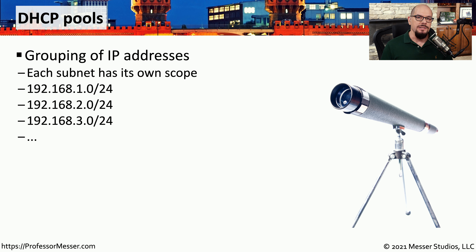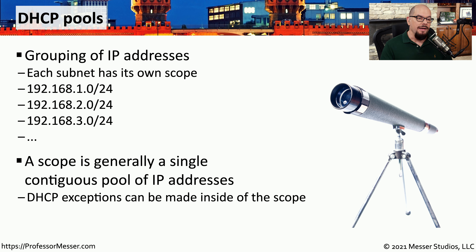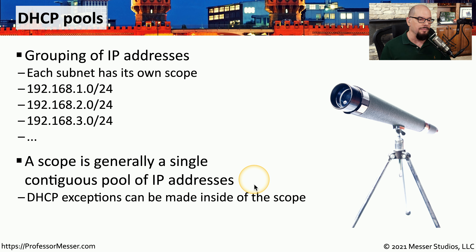This grouping of IP addresses is called a pool. When a client needs an IP address, it sends a request to the DHCP server, and the DHCP server assigns an IP address from anyone that may be available in this pool. A DHCP server may also have a scope of addresses — the scope is a single contiguous pool of IP addresses that can be chosen for this automatic assignment process. Inside of the scope, you can make exceptions, so there may be certain IP addresses that you would not assign to local clients.